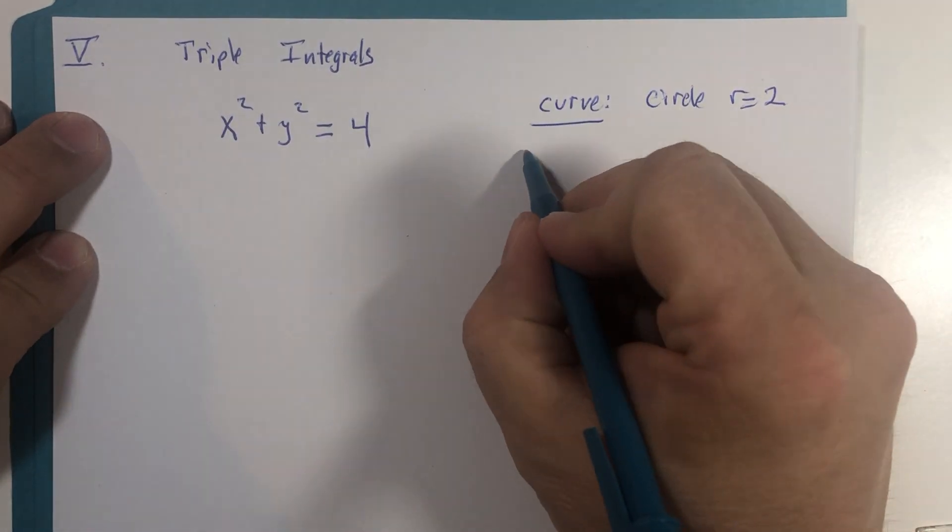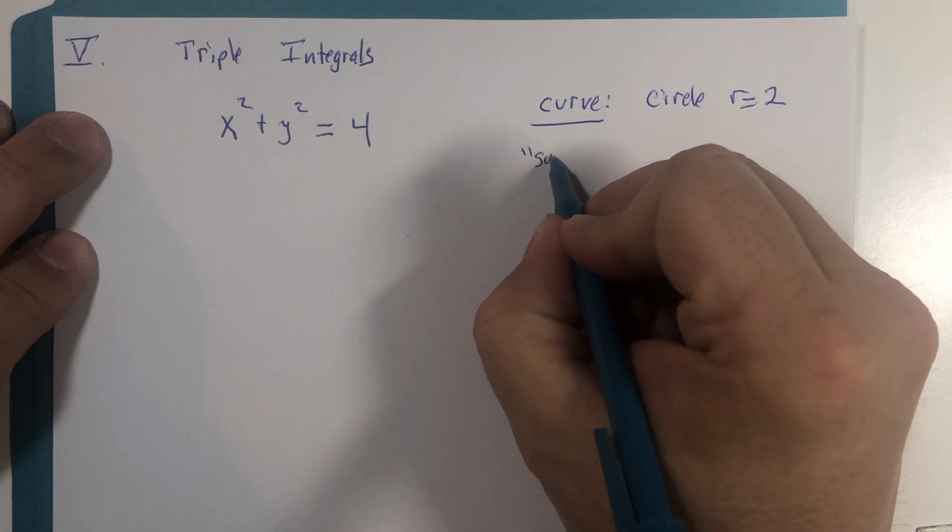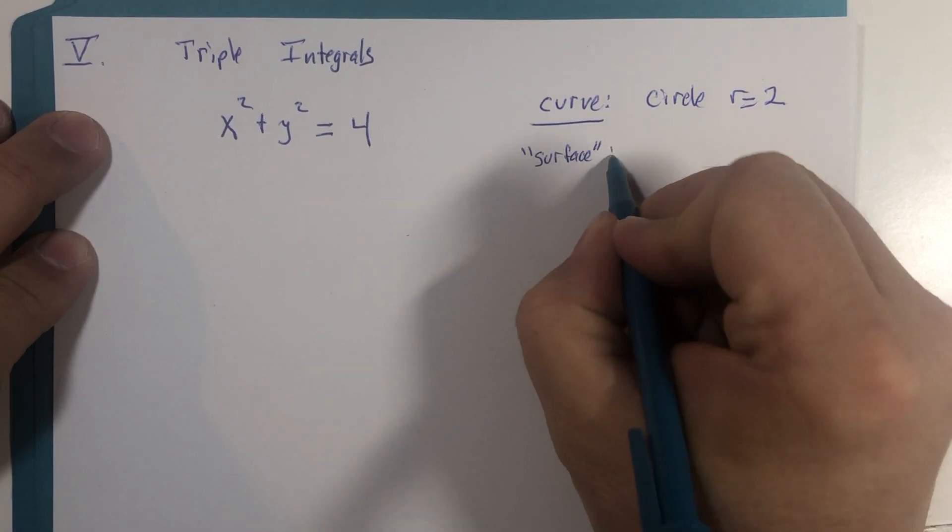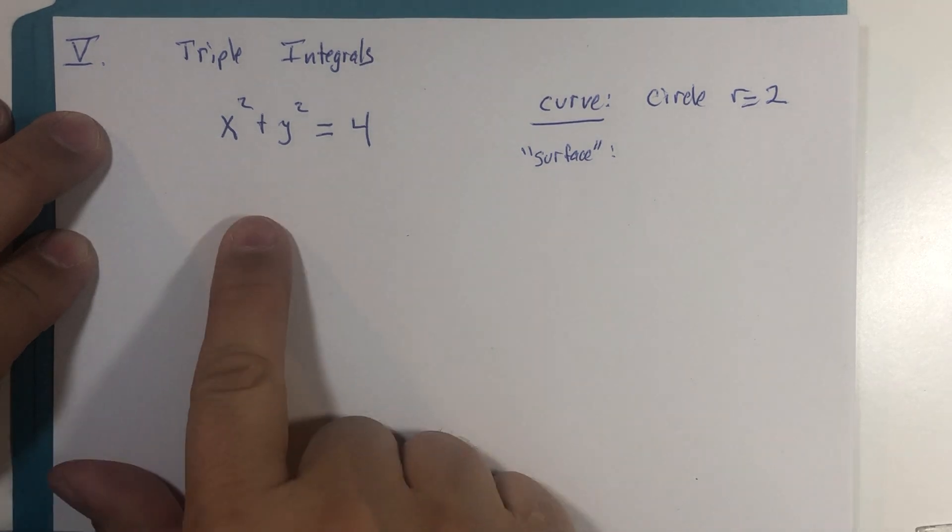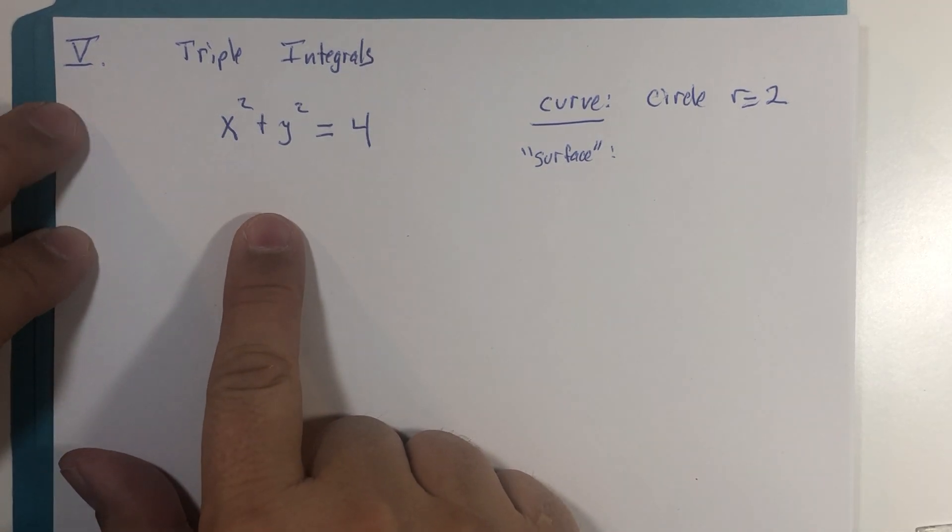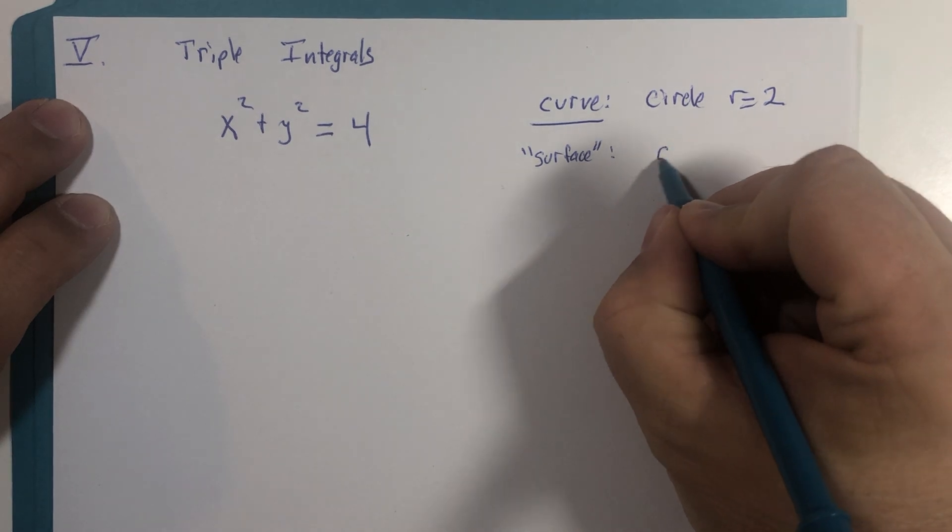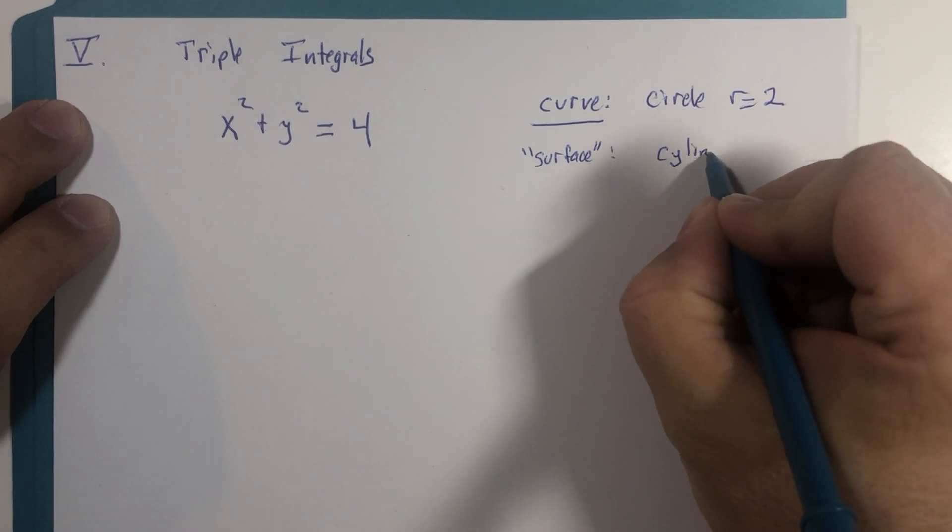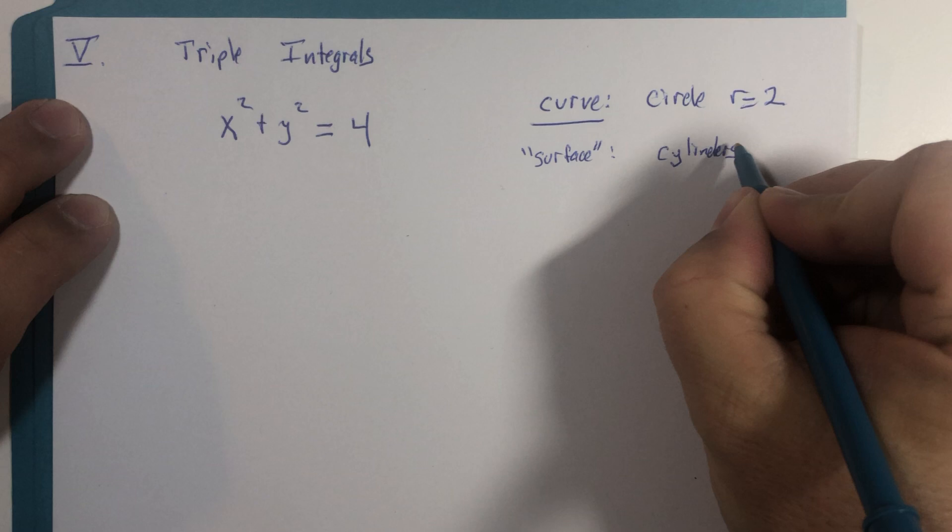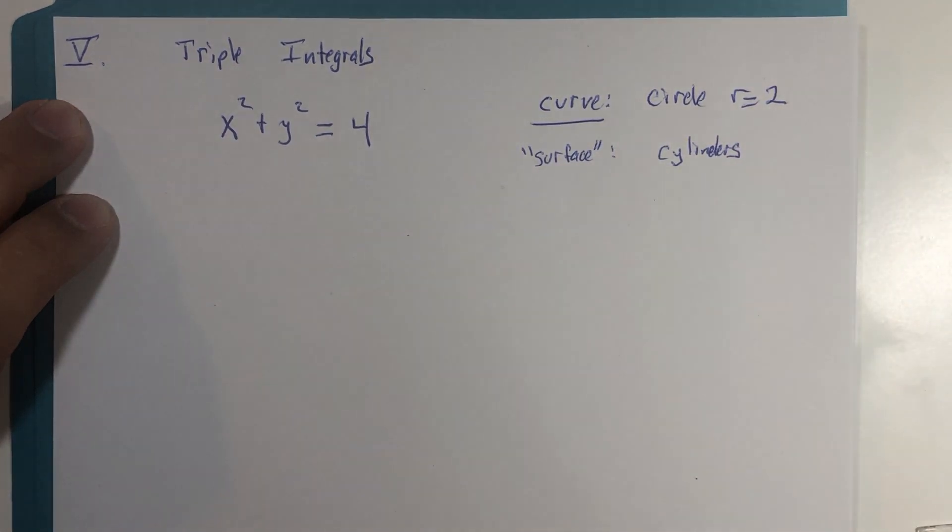But what if it was labeled as a surface? Well, when we first were introducing the graphs of surfaces in three dimensions, one of the categories was called cylinders. And there were some graphs called cylinders that we wondered why they didn't look like a cylinder in the geometric sense.